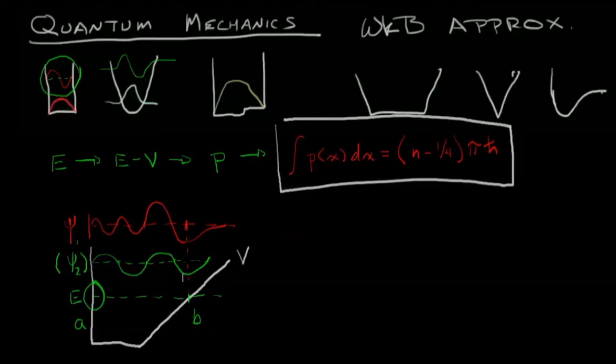But what I do notice is that if B is the classical limit, that the wave function itself will quantize a little bit off of B. Basically, it'll quantize so the wave function is one quarter of a wave function beyond B. In other words, at B, the wave function is at some sort of maximum. This is what the n minus one quarter means.